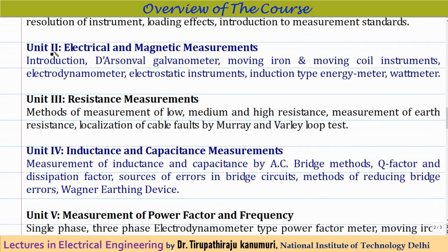Module 2 is electrical and magnetic measurements. We will start with an introduction and then cover D'Arsonval galvanometer, moving iron type, moving coil type, electrodynamometer type, electrostatic instruments, and induction type instruments. After that, we will see the application of these instruments for measurements of voltage, current, power, and energy — for both single phase and three phase.